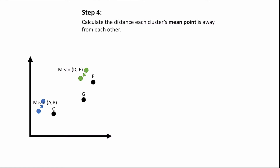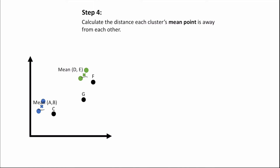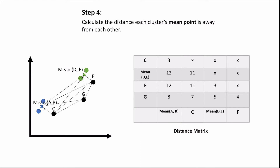For step four, we calculate the distance each cluster's mean point is away from each other. The means of C, G, and F are simply the points themselves. Since D and E have linked together, their mean point is calculated, and likewise for A and B. We calculate the distances and record them in a distance matrix. For step five, we repeat steps two to four until one cluster is formed.